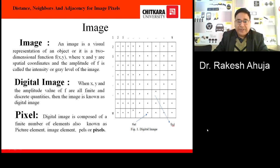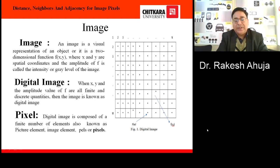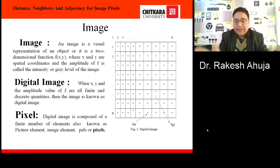What is a pixel? The smallest element in the picture is known as a pixel. A pixel is also named as picture element, image element, pulse, or pixel. But generally, we will use the term pixel in the subsequent slides.